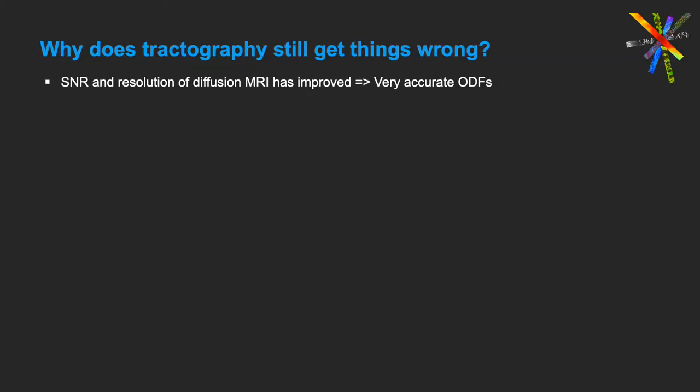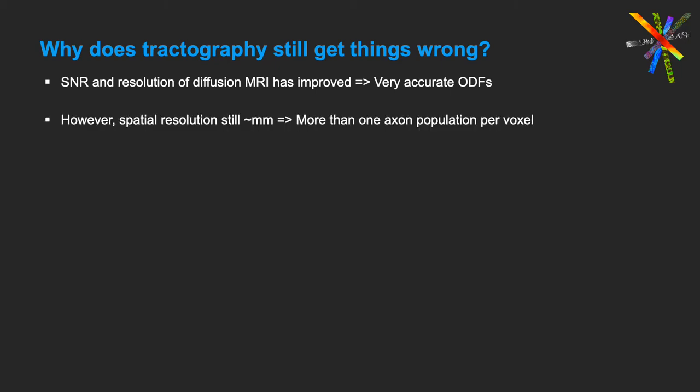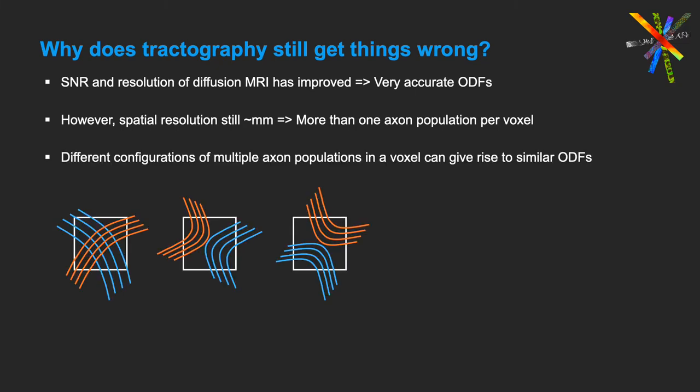Despite the fact that the signal-to-noise ratio and the resolution of diffusion MRI have improved dramatically over the past decade, allowing us to obtain very accurate estimates of orientation distribution functions, tractography still gets things wrong. That's because spatial resolution is still somewhere in the order of a millimeter. Hence, we often have more than one axon population per voxel, and different configurations of these axon populations can give rise to very similar ODFs. These three examples of a blue and an orange axon bundle in a voxel all result in an ODF similar to this.